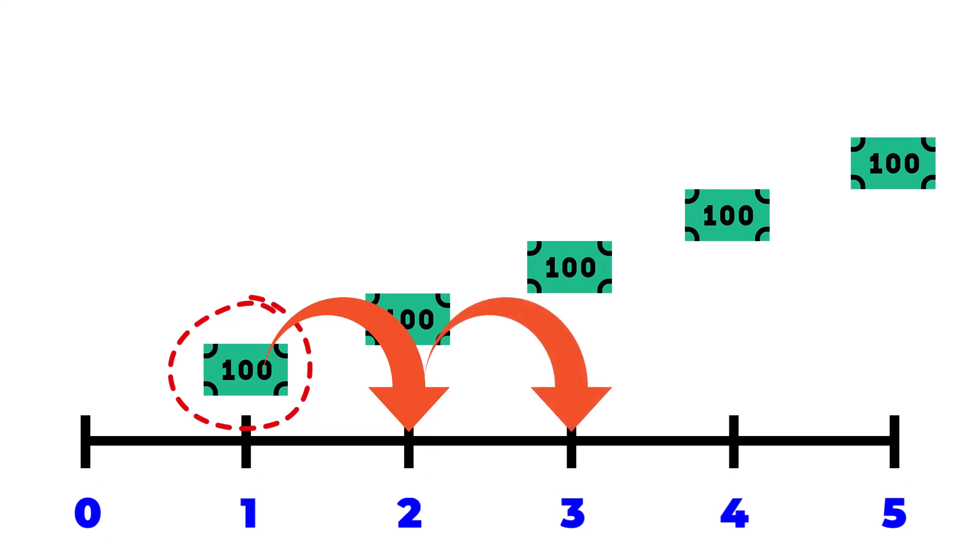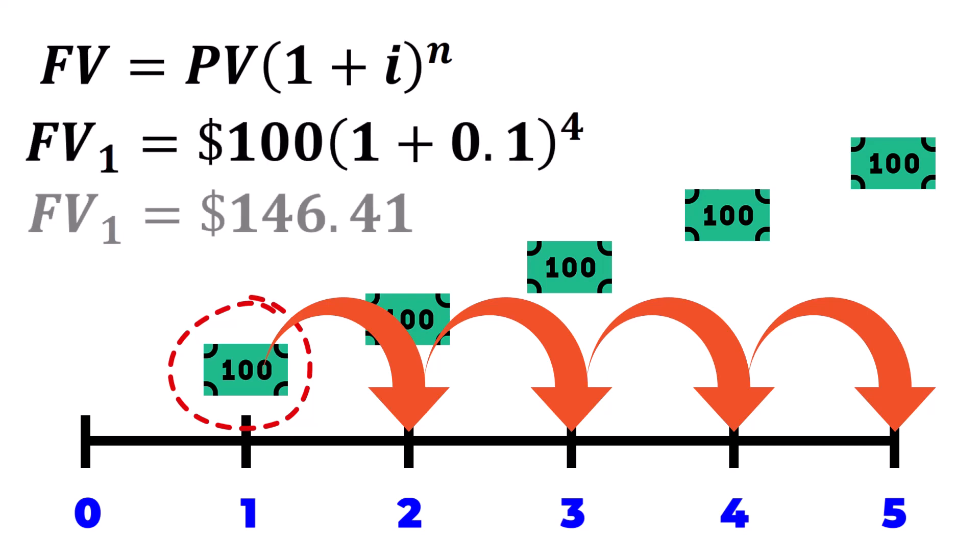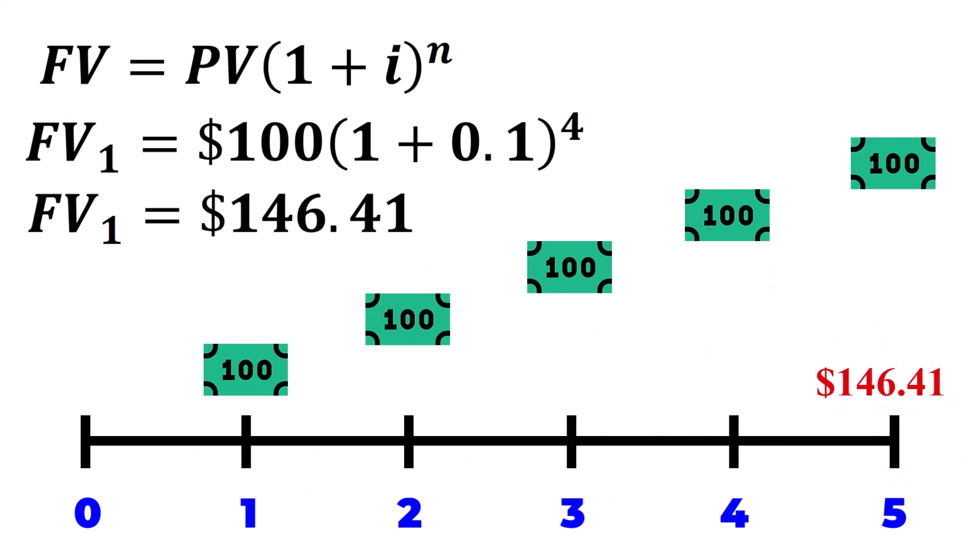again at the end of year 3, again at year 4, and once more at the end of year 5. This totals four compounding periods. Using the future value formula for compound interest, we find that this installment matures to $146.41 by the end of year 5.